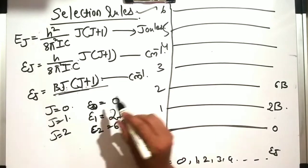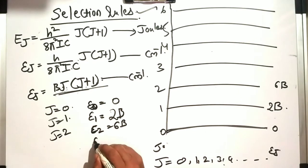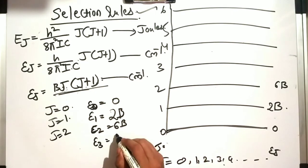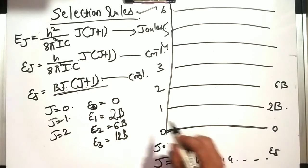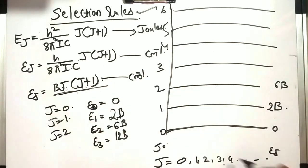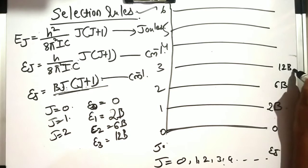Whenever you put the values 3, 4, 5, 6, you get epsilon_3 equals 12B, and it continues. You can put the values 4, 5, 6 like this. This is about the energy selection rules for rotational spectroscopy, or microwave spectroscopy.